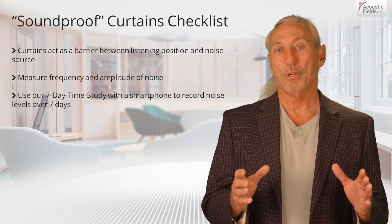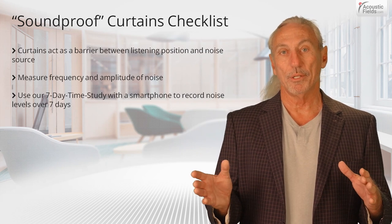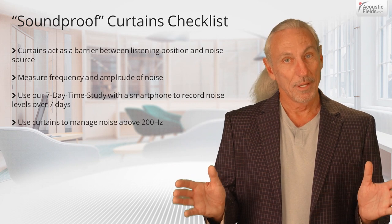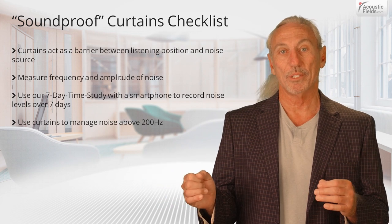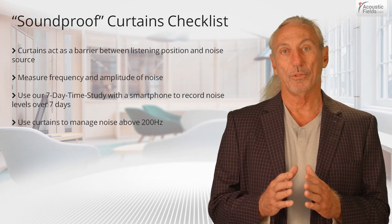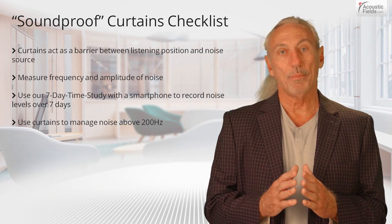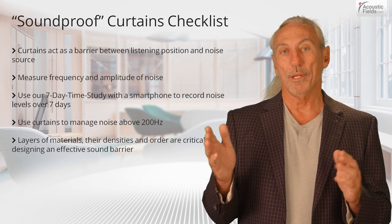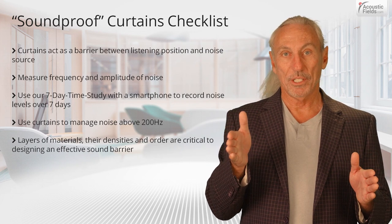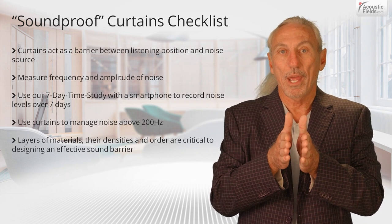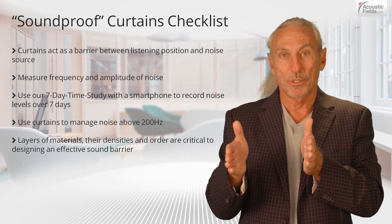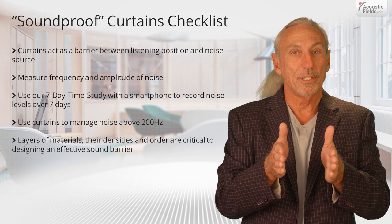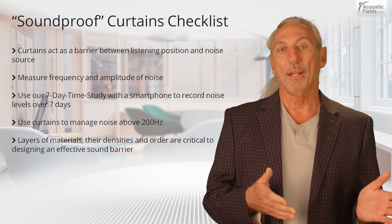If we've measured our frequencies and the numbers show us that our noise problem is above 200 cycles, then we can use a curtain to manage the noise above 200 cycles. It won't be a soundproof curtain, but it'll be a barrier technology we can use to stop noise above 200 cycles. What do we need to do when we design and build this curtain? It's the same technology we use in barriers for buildings — it's layers of materials of different densities. The order in which we arrange those layers is critical. We have to have the greatest densities of materials first between the source and us as the receiver, and then stack the other layers against the highest density layer first.